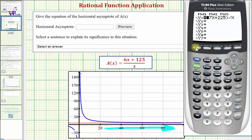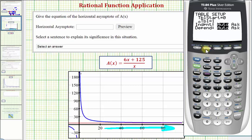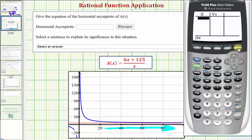If we press y equals, we want to enter our function in y1. So we'd have open parenthesis 6x plus 125 close parenthesis divided by x. Now we're going to use a table, but before we do that, let's press second window for table set. Let's change the independent variable to ask. We'll highlight ask and press enter. Now we'll go to the table of values by pressing second graph.